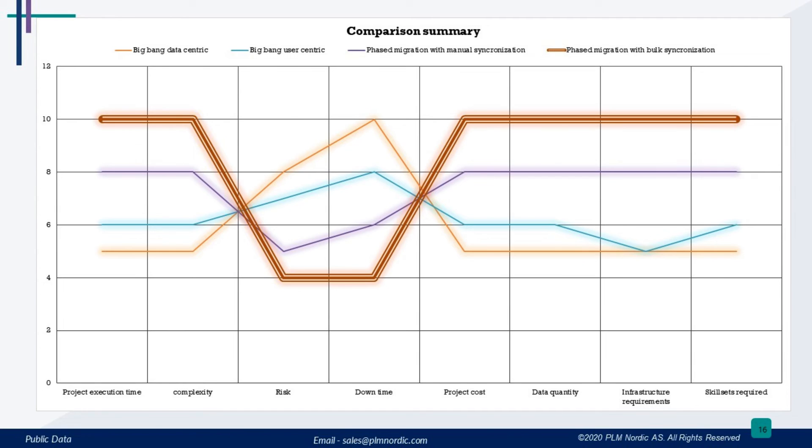Finally, phased migration with bulk synchronization has the least downtime, minimal risk, and can handle the most data. Nevertheless, it's more expensive, takes the most time, and requires a high level of skilled individuals and infrastructure.